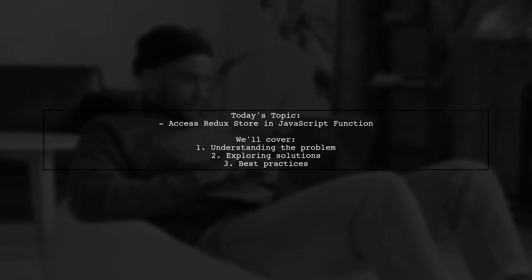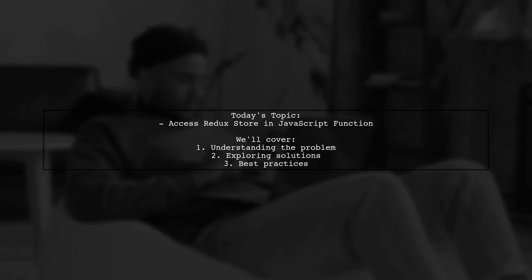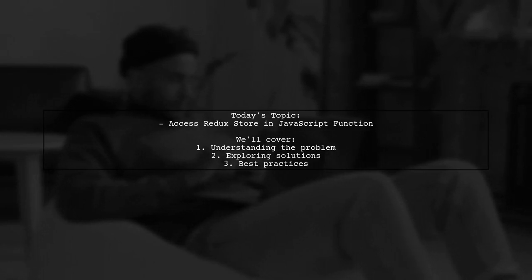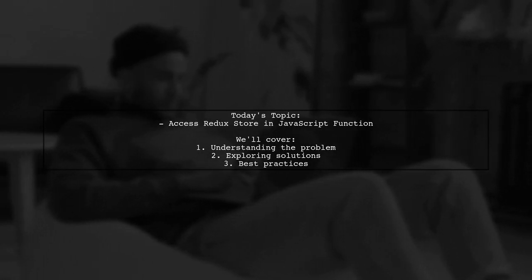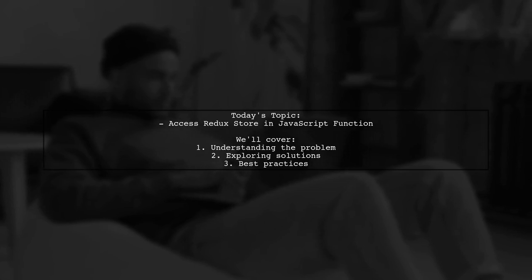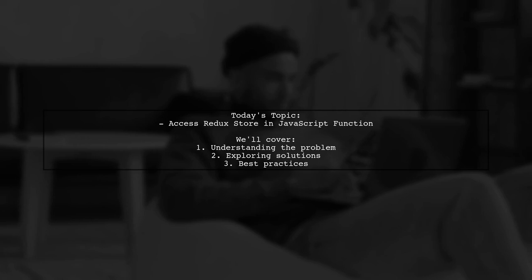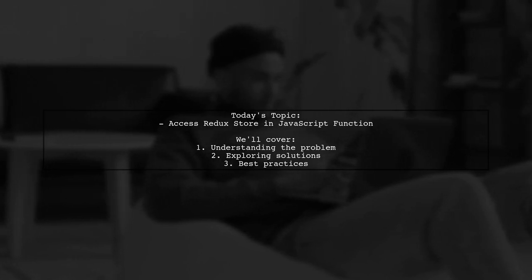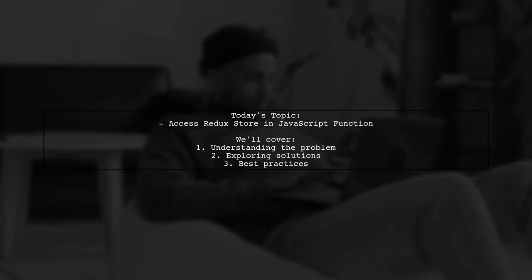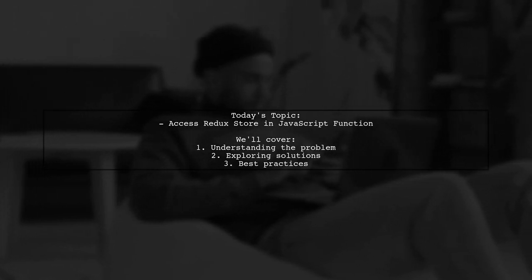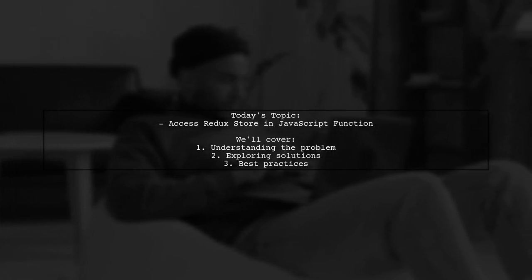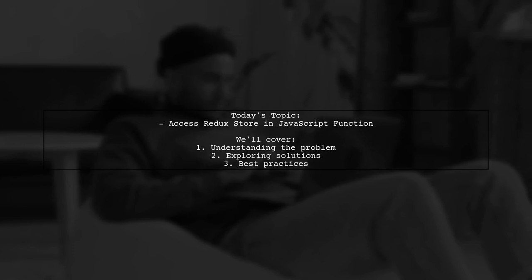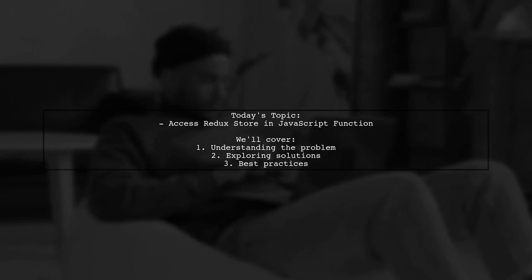They're curious if there's a way to connect Redux state to a function without explicitly passing it as a parameter. This question arises from a desire to optimize API calls in their Redux Action Generator, avoiding unnecessary requests when the data is already available in the state. Let's explore this intriguing topic together.